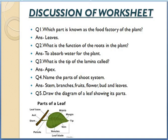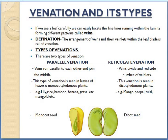Moving further in the chapter, the next topic is venation and its types. To understand venation, first we have to understand its meaning. If we see a leaf carefully, we can easily locate the fine lines running within the lamina, forming different patterns called veins.